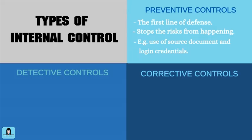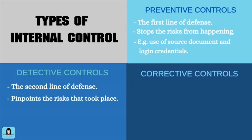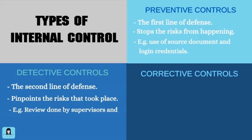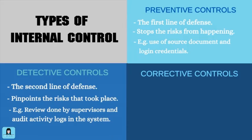Detective controls form the second line of defense. These are devices, techniques, and procedures designed to identify and expose undesirable events that escaped or eluded the preventive controls. Examples of detective controls are the review of the details on the document done by the supervisor, and audit activity logs that are automatically recorded by the application software each time a user accesses the system.